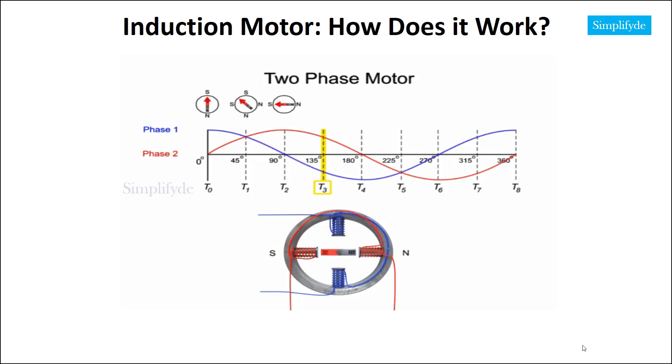At time 3, phase 2 has diminished current flow, while current flow through the vertical rotor coils increases and reverses direction. This causes the rotor to move another 45 degrees to the left.